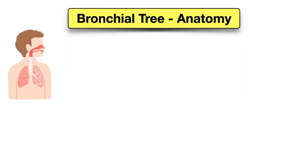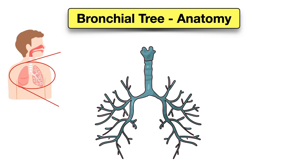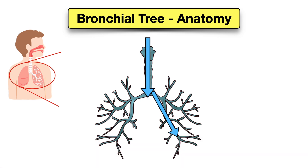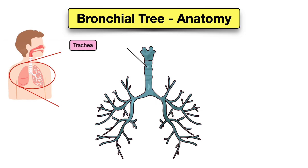Let's zoom in on the respiratory system and look at the anatomy of the bronchial tree. The bronchial tree — or tracheobronchial tree — is the network of branching airways in the lower respiratory tract that conducts air from the trachea to the alveoli. First we have the trachea, also known as the windpipe, which is the main trunk of the bronchial tree that allows air to travel from the nose or mouth to the lungs.